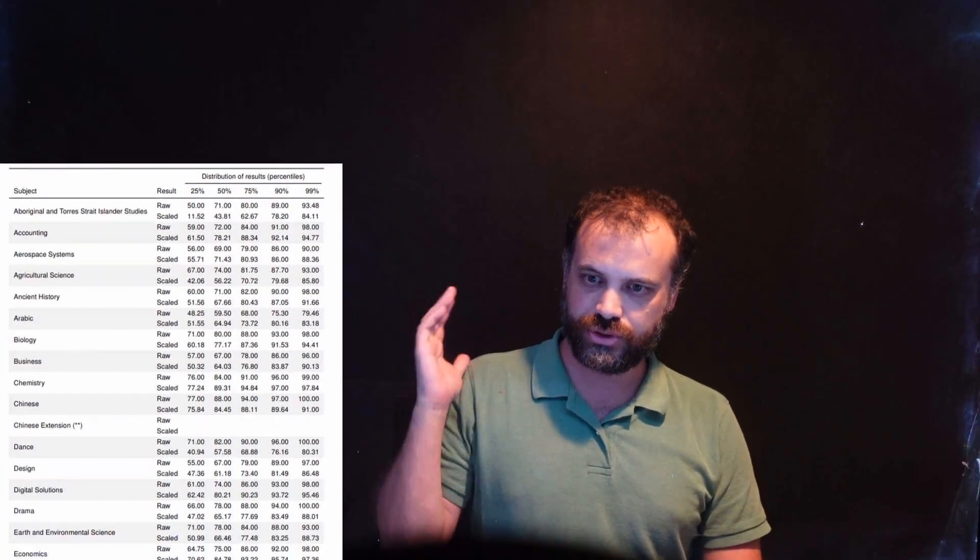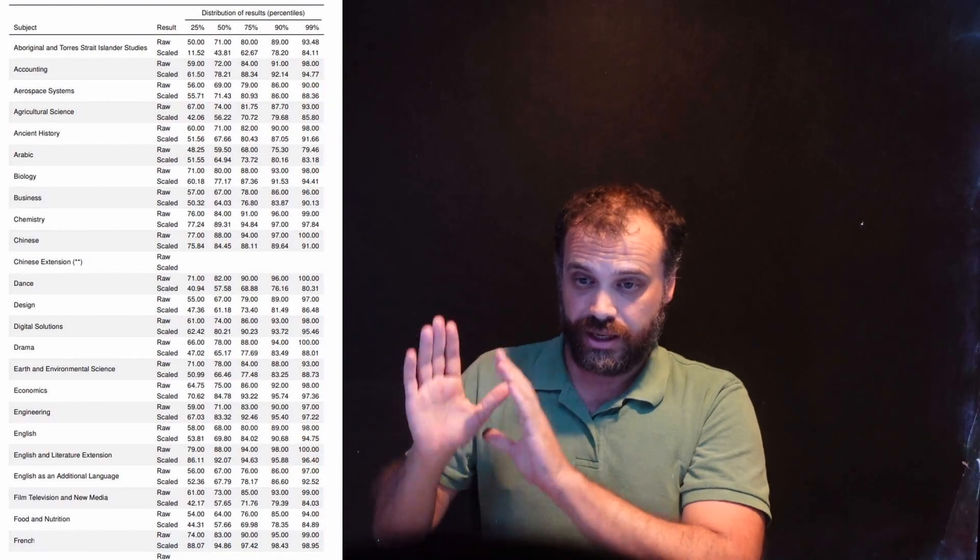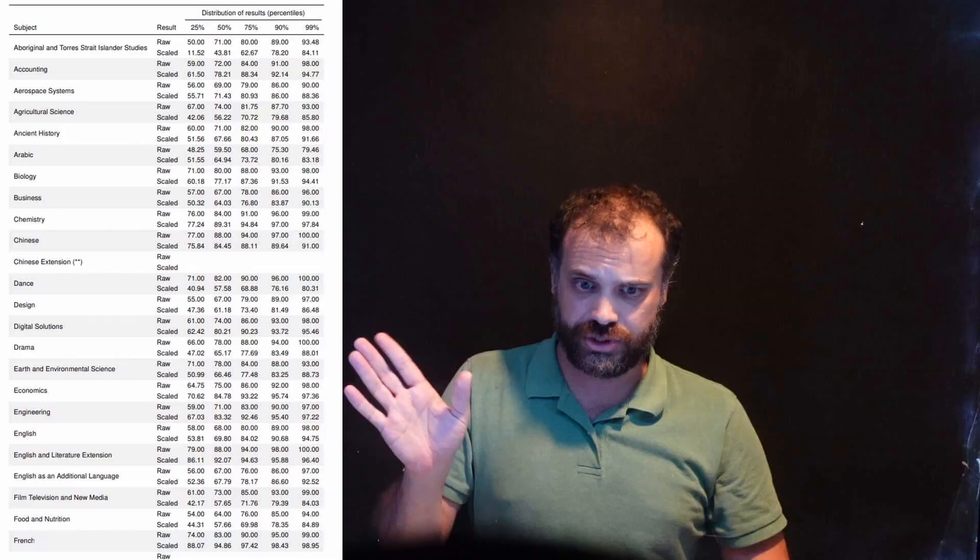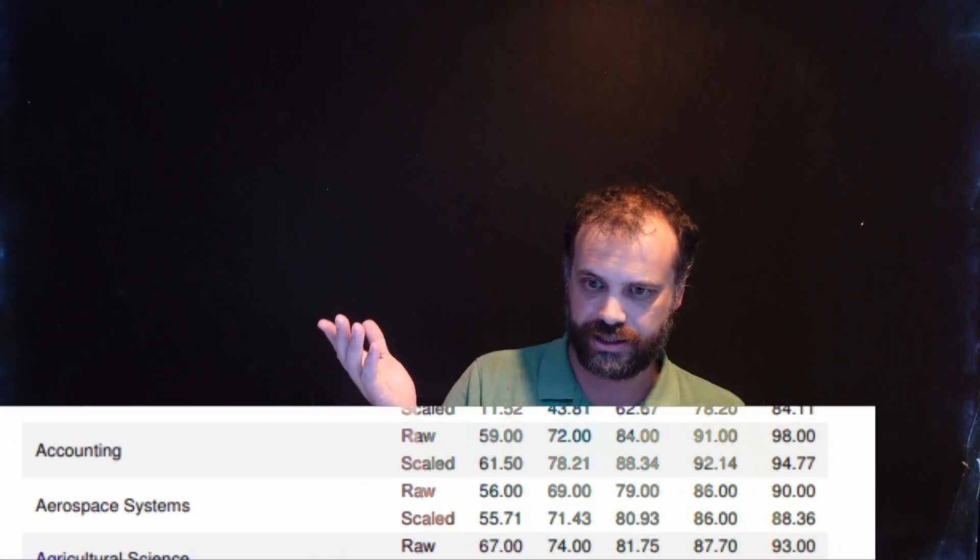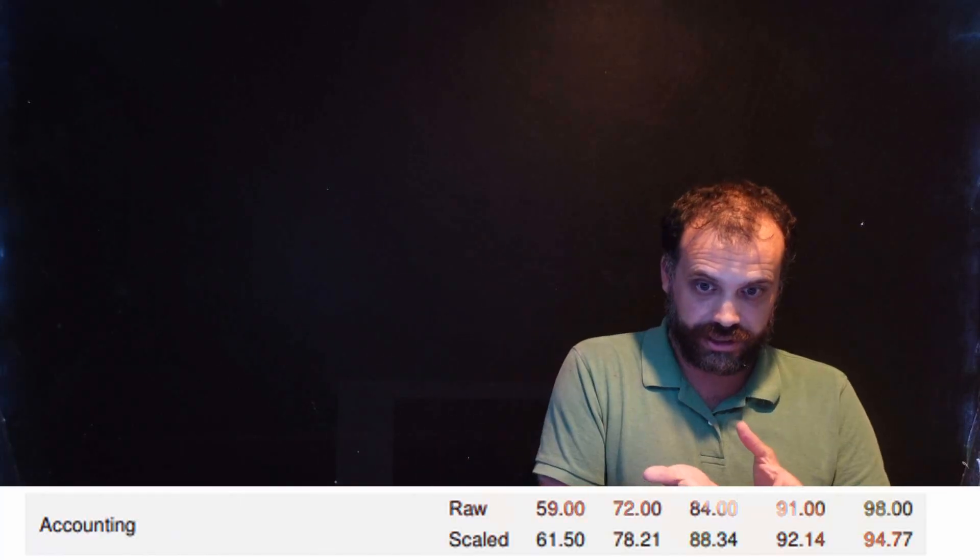In order for me to create that calculator, I had to go to the ATAR report and grab all of this data. Let me show you what I did just for one subject. So let's take accounting, zoom in on that. Once I had accounting's data, raw score of 59 translates to a scaled score of 61.5.